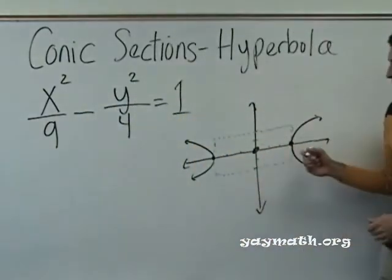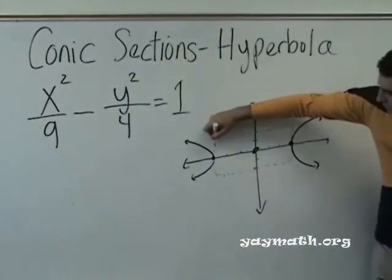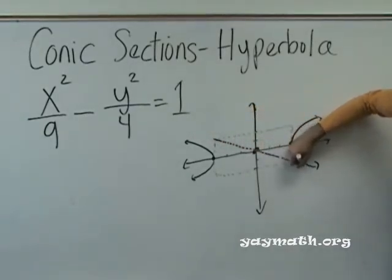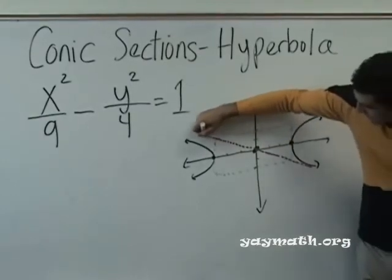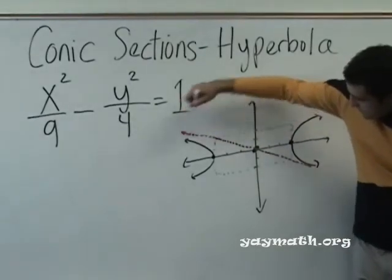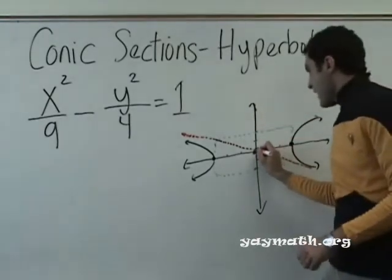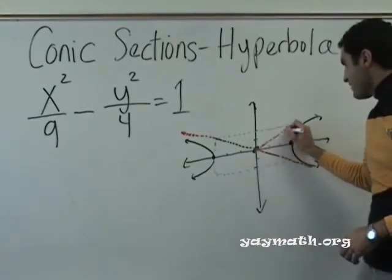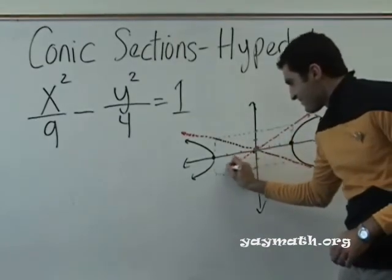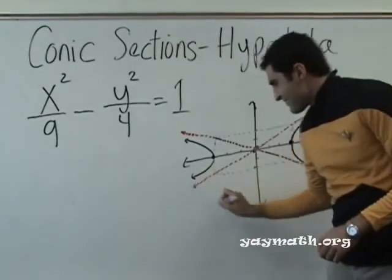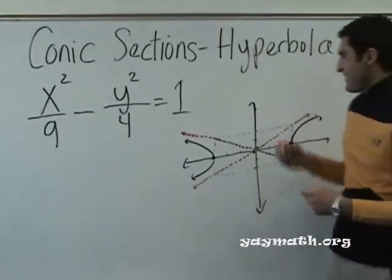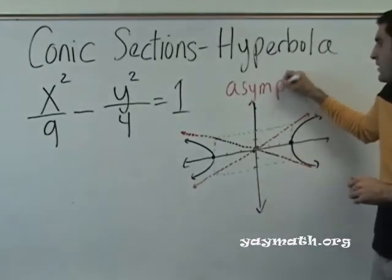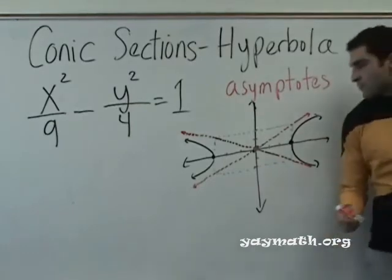Asymptotes. Asymptotes are lines that the hyperbola will never touch. They are the diagonals of this rectangle. So, please draw those diagonals of the rectangle and the hyperbola will never touch these lines. And what's it called? Asymptotes. I'm going to write that.